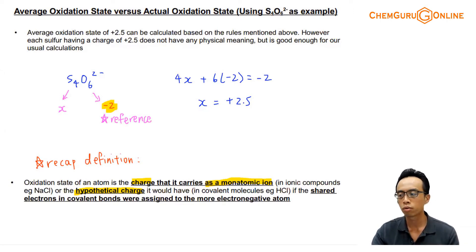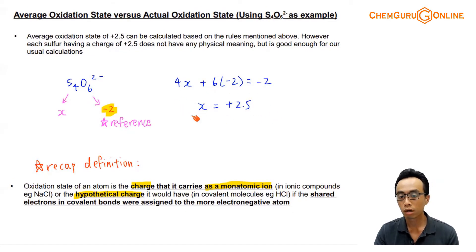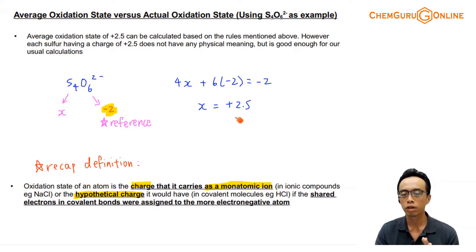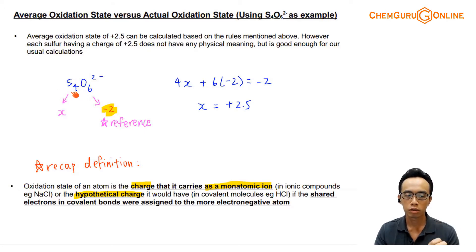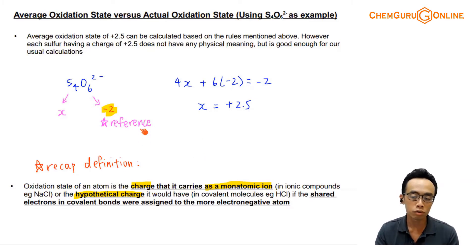If I have an oxidation state of plus 2.5, but it is not possible to transfer half an electron, then it is not possible for sulfur to have a charge of plus 2.5. So where is this discrepancy? What we are doing here is calculating the average oxidation state. The actual oxidation state of sulfur is not 2.5. Out of the 4 sulfur atoms inside S₄O₆²⁻, some may be higher than 2.5, some lower, but when we average them, we get 2.5.